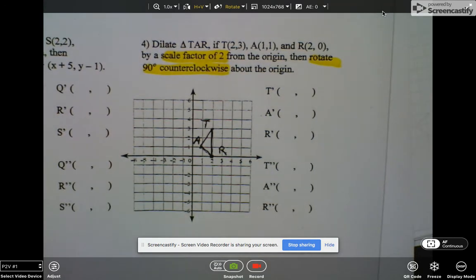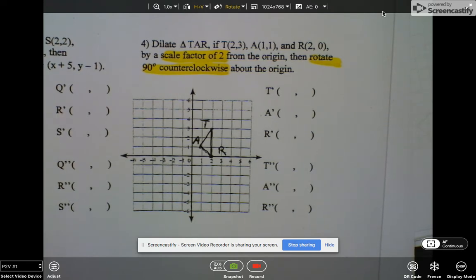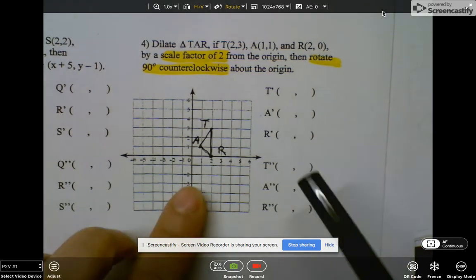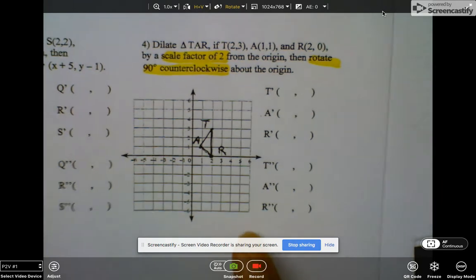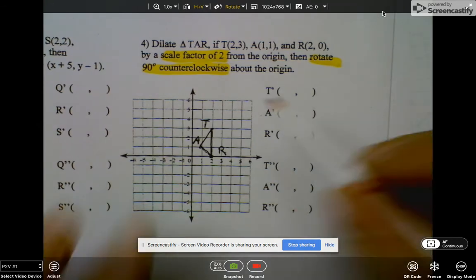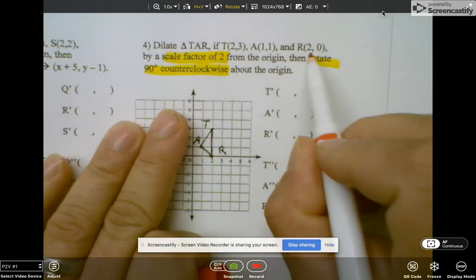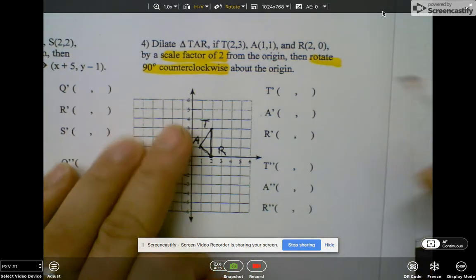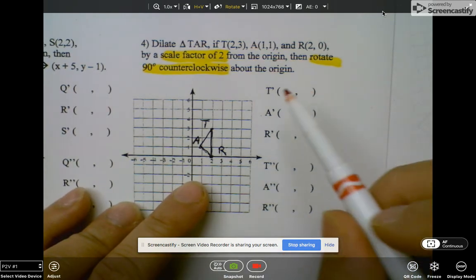And then you'll see a rotation of 90 degrees counterclockwise. Okay, so the first thing you want to do - it doesn't look like right now we have anywhere to put the regular TAR, so I'll do that in red. Oh no, it's right there. So T(2,3), A(1,1), and R(2,0). So the first thing to do is a scale factor of two.